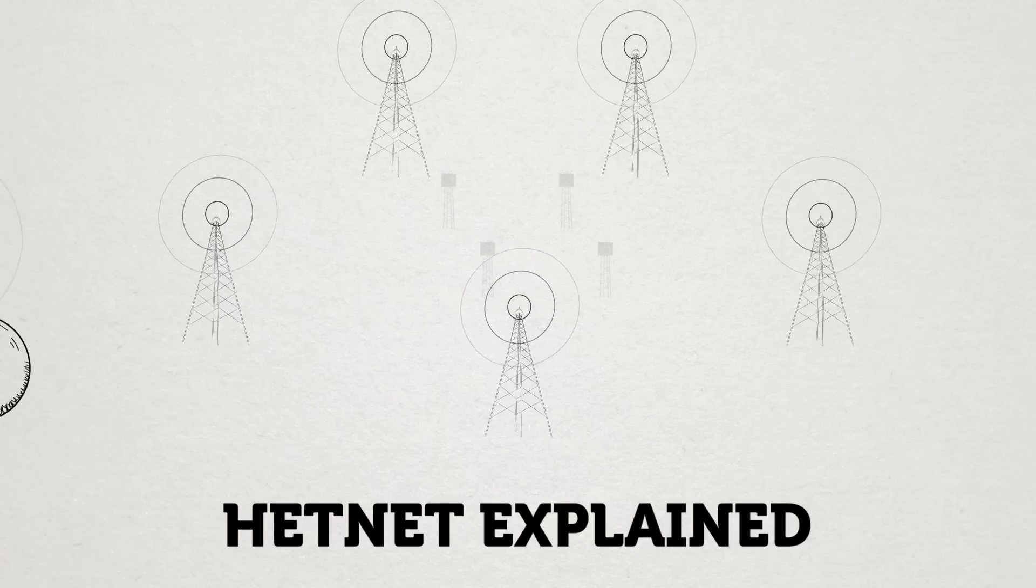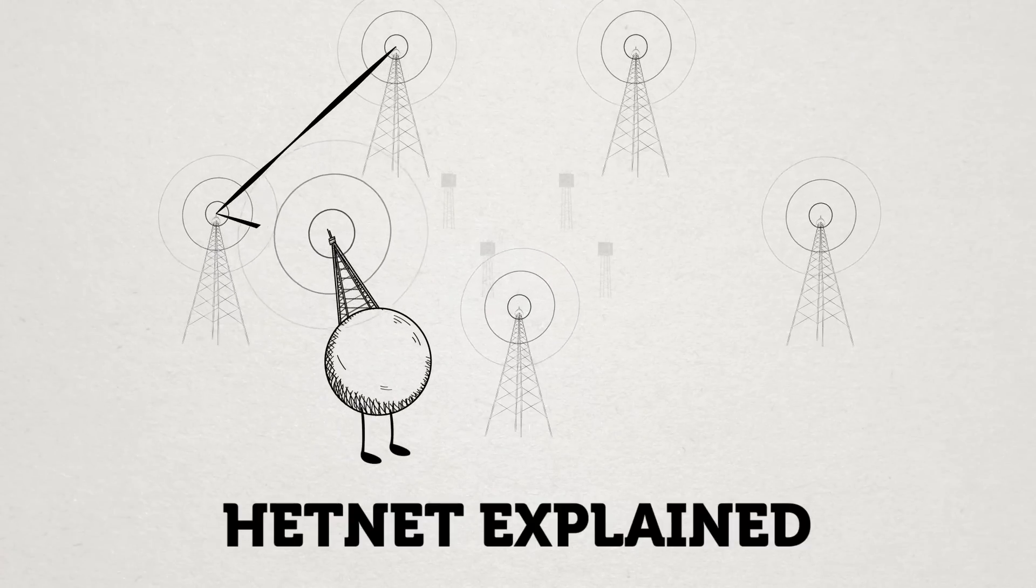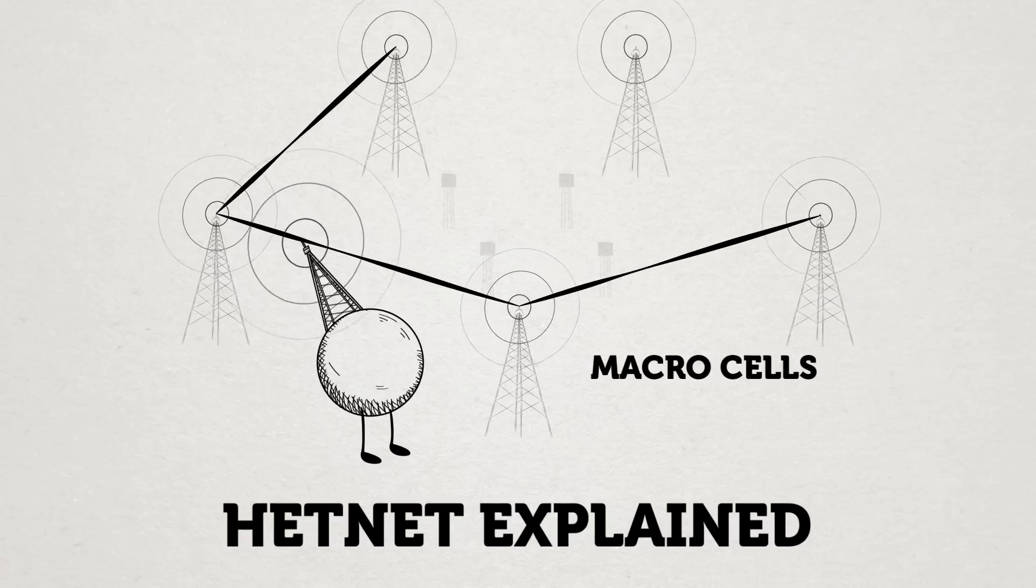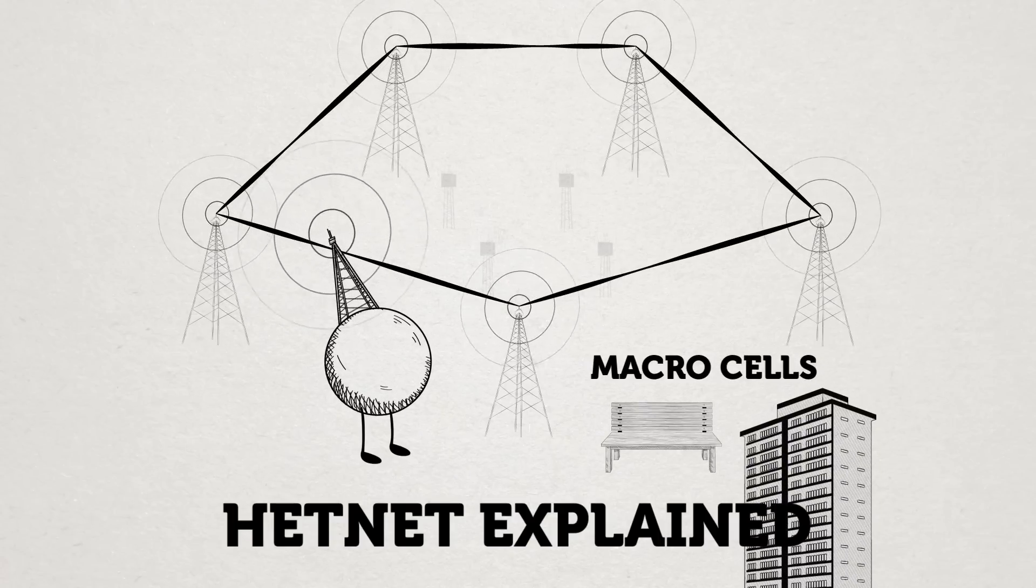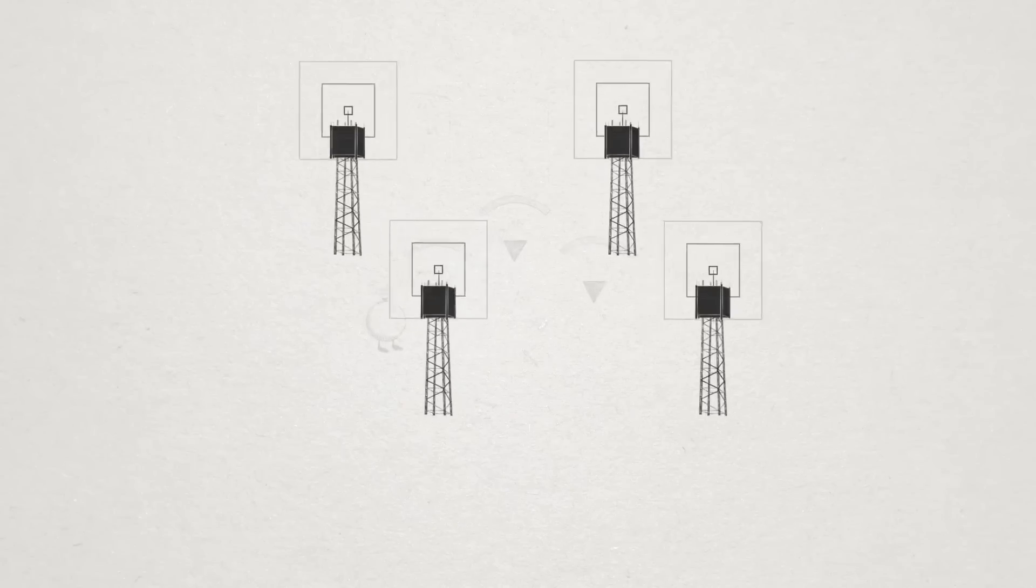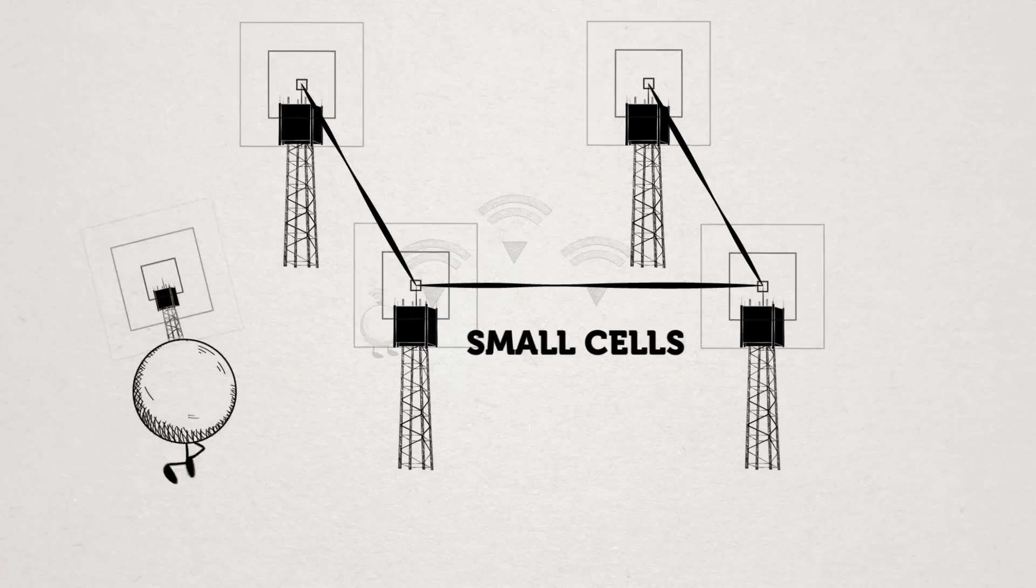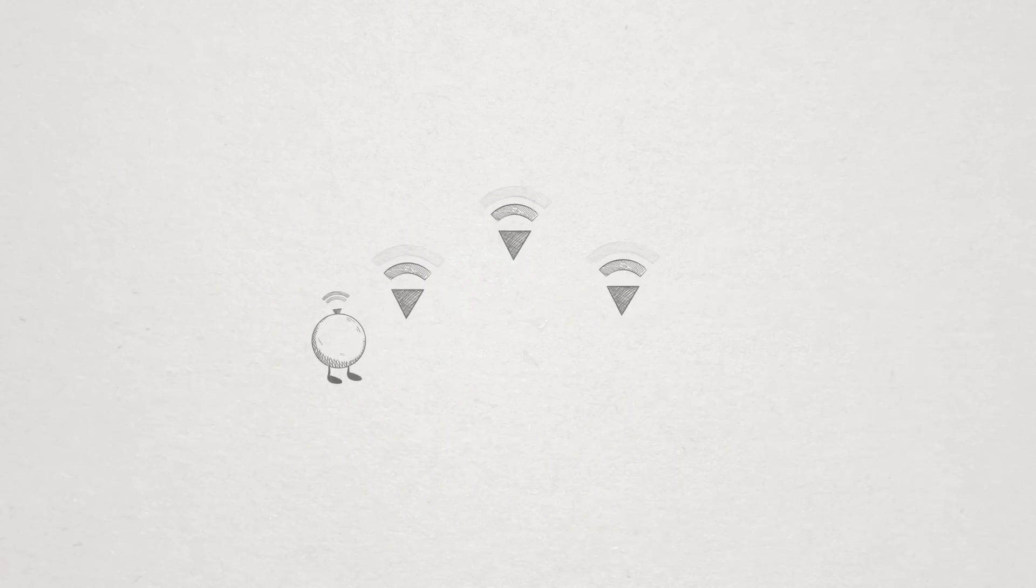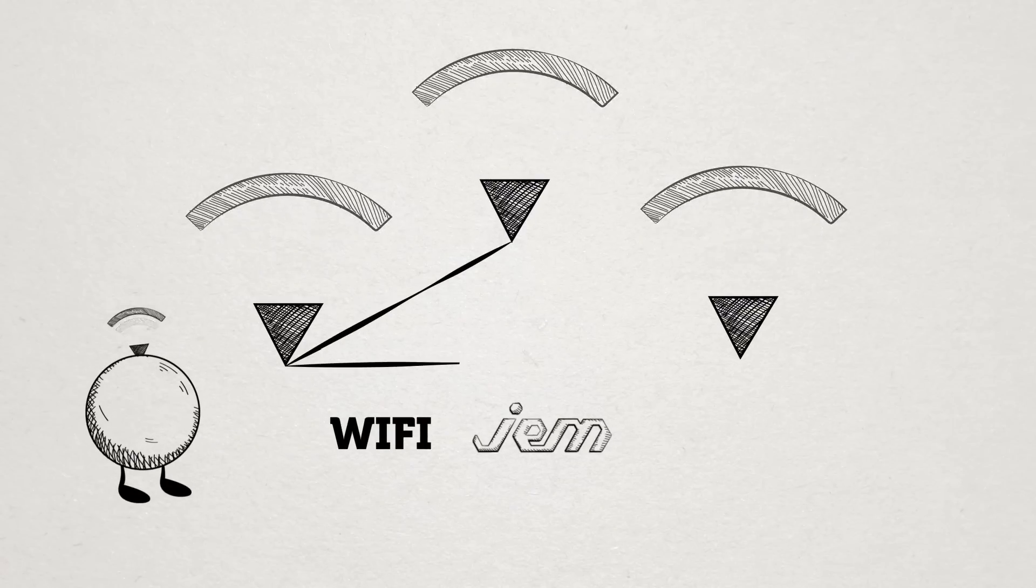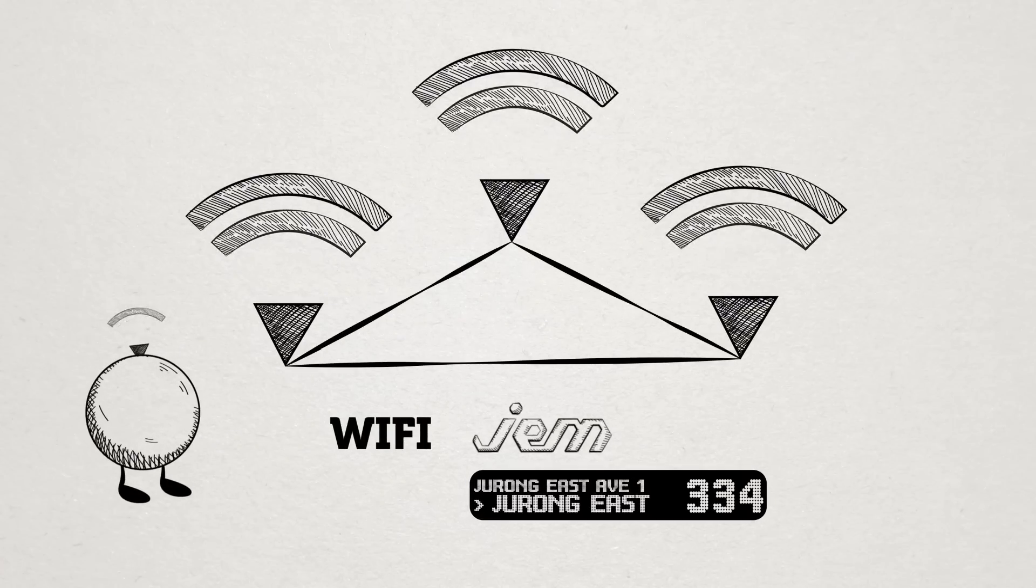During the trials, we tested three main components of HetNet. For the widest coverage, Singtel's terrestrial network of macro cells installed outdoors and on HDB rooftops. Small cells that enhance capacity fitted across Jem and Jurong East MRT station, and Wi-Fi at Jem, and even in bus number 334.